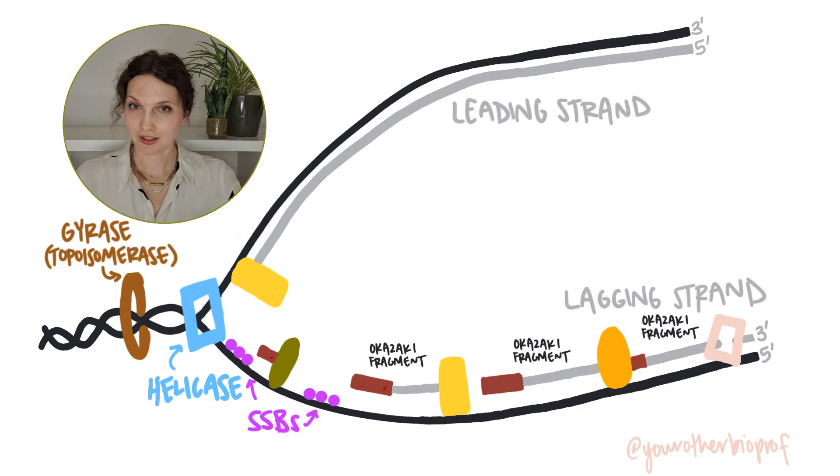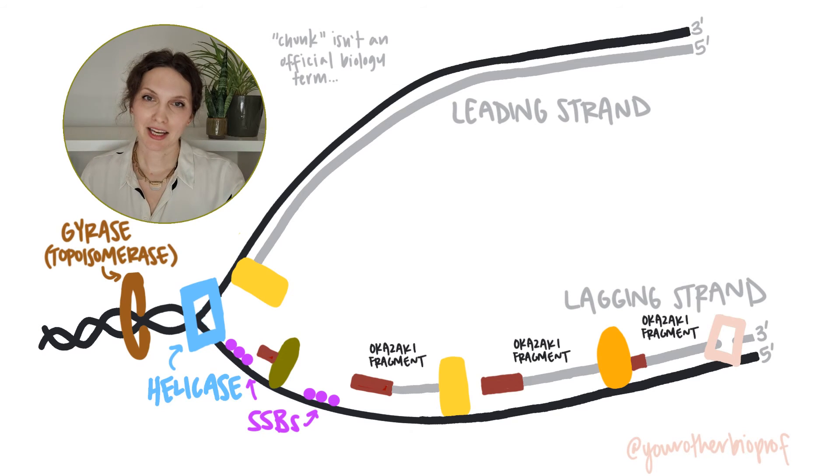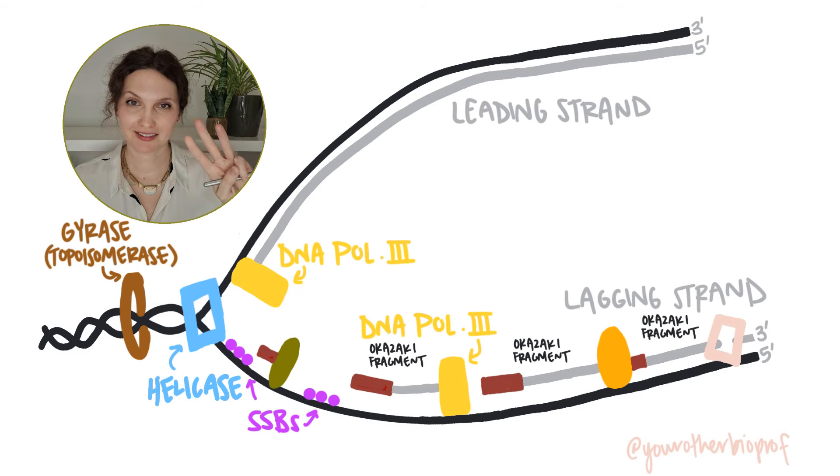Both the leading strand and the lagging strand are going to be generated by DNA polymerases. These are enzymes that create polymers of DNA. They take nucleotides and chunk them together to make a big strand. Like eukaryotes, prokaryotes have multiple polymerases as well. For the leading and lagging strand, that synthesis is going to be done by DNA polymerase 3.